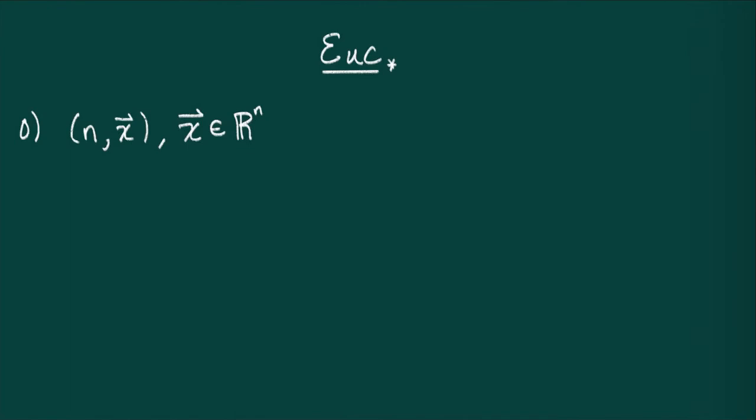Next, I need to tell you what a map is in this category. A map from n comma x to m comma y is defined to be the data of a smooth map f from R^n to R^m, satisfying the property that it sends x to y.